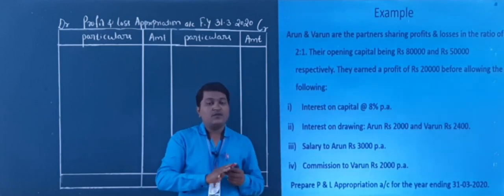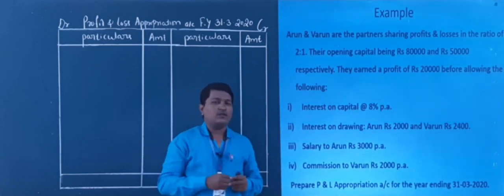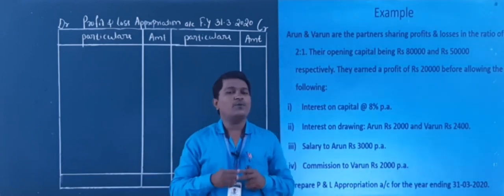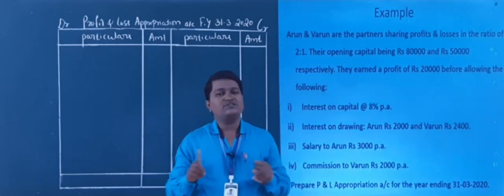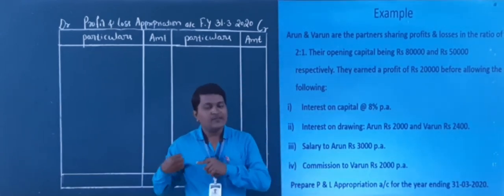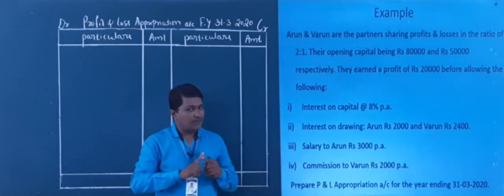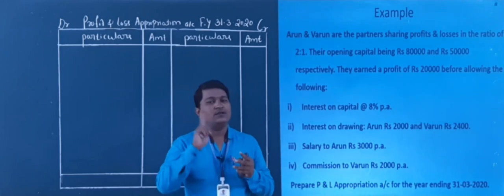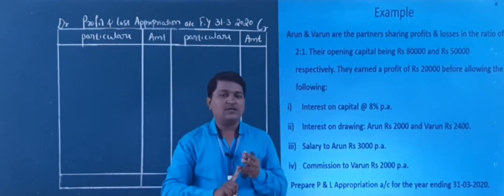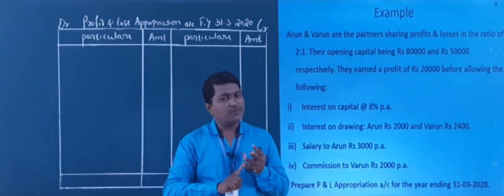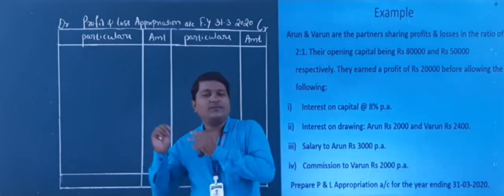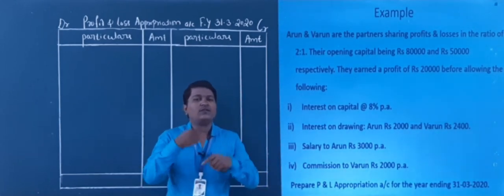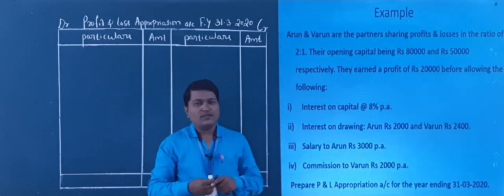The debit side shows the loss maximum. If you have a debit side, you have interest on capital, salary, commission, and then interest on the partner's loan. Always solve the format first, then go for the solution. Now the problem starts.